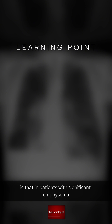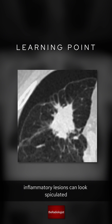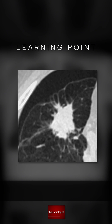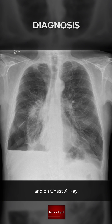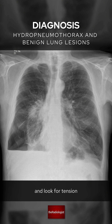One of the learning points here is that in patients with significant emphysema, inflammatory lesions can look spiculated, and you literally need to clinically correlate. If there are signs of pneumonia, a follow-up CT may be a good idea. And on chest x-ray it's really important to spot the signs of pneumothorax and look for tension.